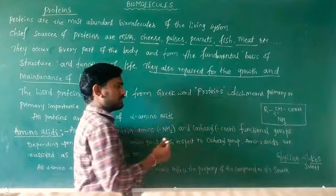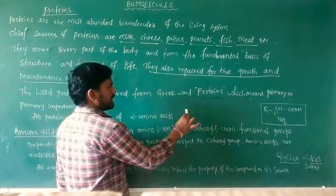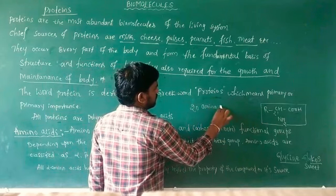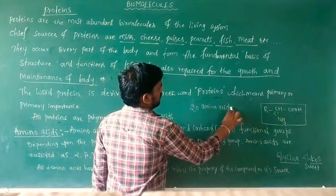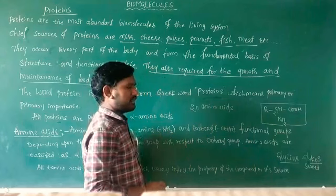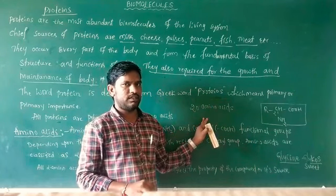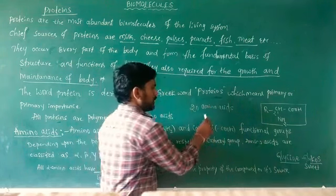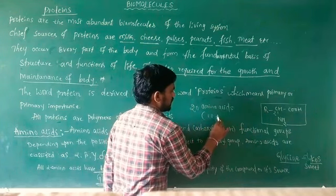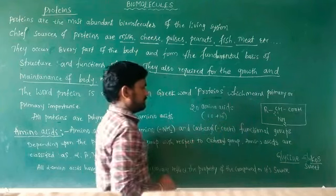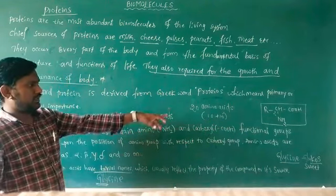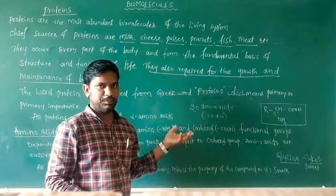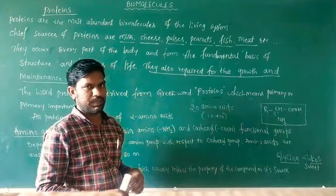How many amino acids are there naturally? There are 20 amino acids. Among those 20 amino acids, 10 are essential amino acids and 10 are non-essential amino acids. Amino acids are also classified as acidic, basic, and neutral amino acids.